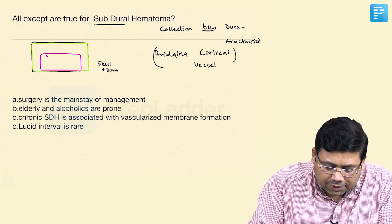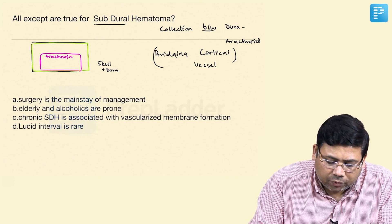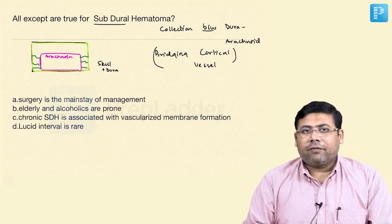Suppose this is the arachnoid, and between the arachnoid and the dura, you have some vessels and these are known as bridging cortical vessels.